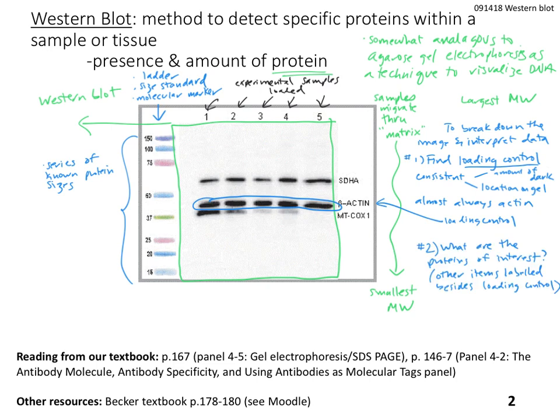The next thing we want to do when we break down the Western blot is to sort out what the proteins of interest are. Eventually this ties into a biological question and overall understanding of the process, but for now we want to get an idea of their names. The proteins of interest are other proteins besides the loading control that are visualized on the gel — labeled off to the side. Here we have SDHA and MT-COX1.